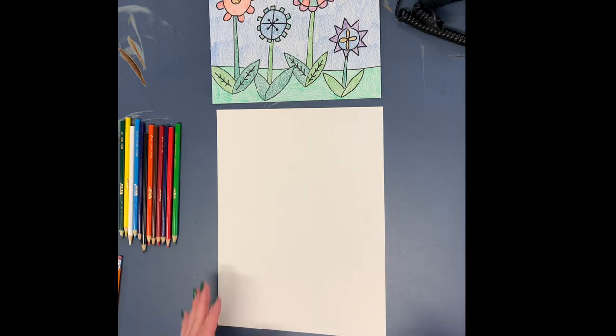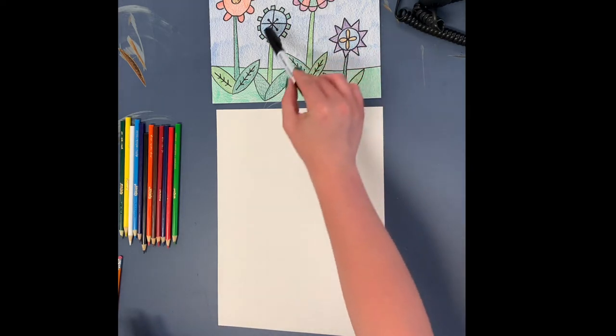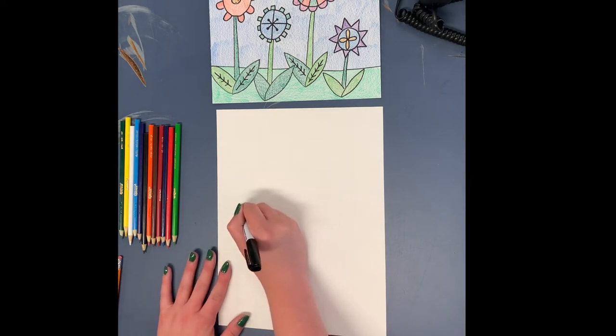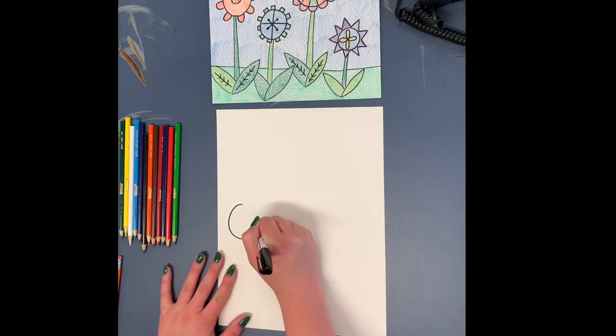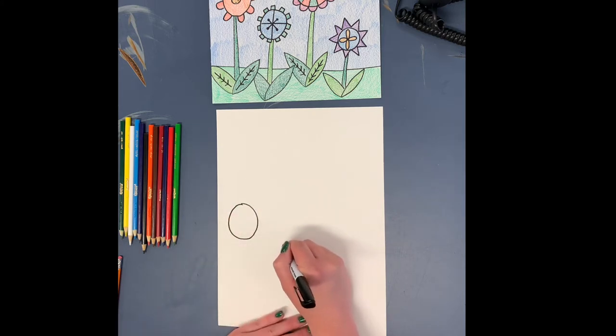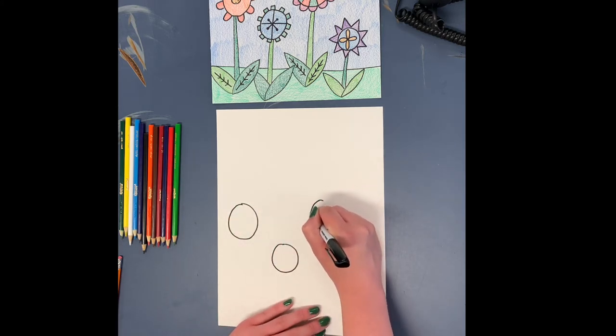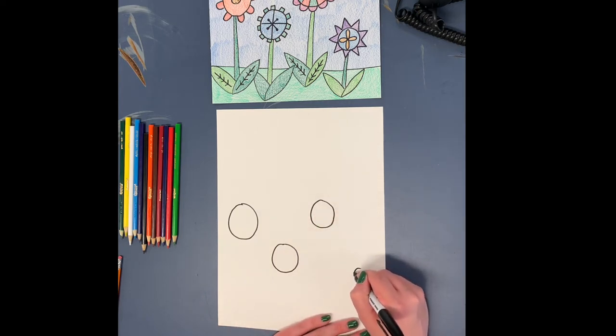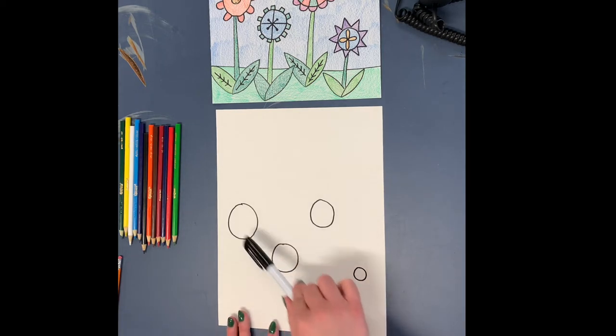The first thing you want to do is you should be able to fit about four flowers in your project, so start by drawing some circles at different places down on the paper. And they can be different sizes. Some flowers are smaller than others, so I just did four circles like that.